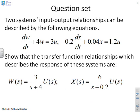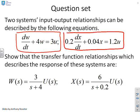Here's a typical question then. Two systems are given here. You see the first one: dw/dt + 4w = 3u and 0.2dx/dt + 0.04x = 1.2u. And the challenge is to find the transfer function relationships for these models.